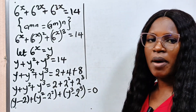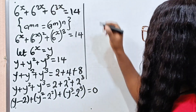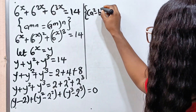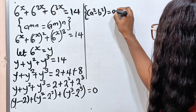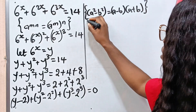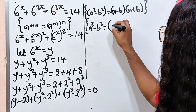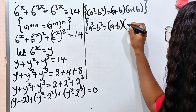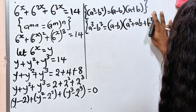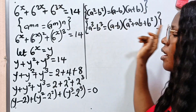Now remember these algebra identities. The first one: a squared minus b squared is equal to a minus b multiplied by a plus b. Also, a to the power of 3 minus b to the power of 3 is equal to a minus b multiplied by a squared plus ab plus b squared. We are going to expand the equation using these particular algebra identities.